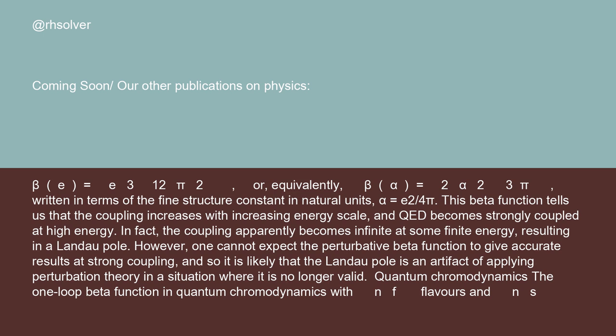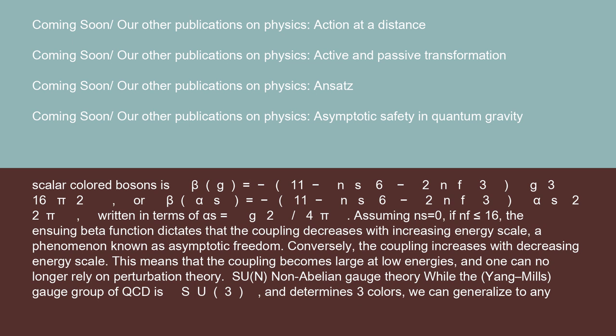Quantum chromodynamics: the one-loop beta function in quantum chromodynamics with N_F flavors and N_S scalar colored bosons is β(g) = -[(11 - N_S/6 - 2N_F/3) × g³/(16π²)], or β(α_S) = -[(11 - N_S/6 - 2N_F/3) × α_S²/(2π)], written in terms of α_S = g²/(4π). Assuming N_S = 0, if N_F ≤ 16...